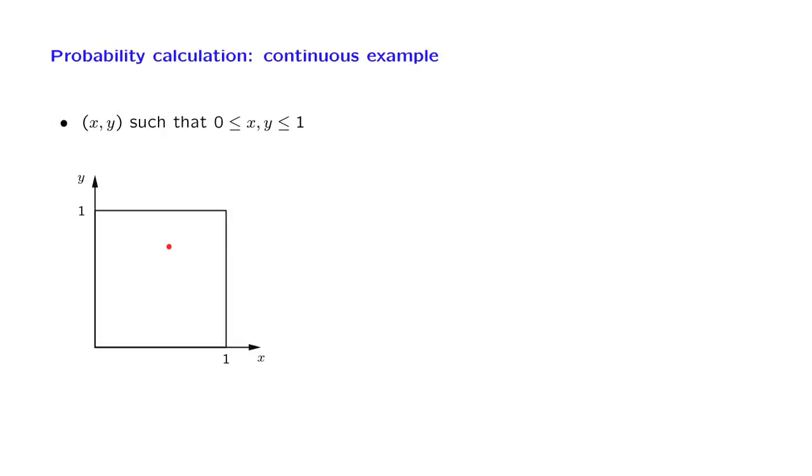We have a description of the sample space, but we do not yet have a probability law. We need to specify one. The choice of a probability law could be arbitrary. It's up to us to choose how to model a certain situation. And to keep things simple, we're going to assume that our probability law is a uniform one, which means that the probability of any particular subset of the sample space is going to be the area of that subset.